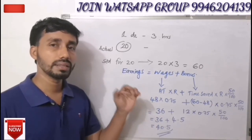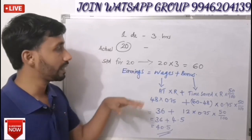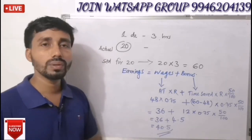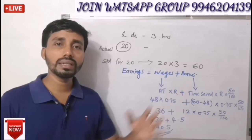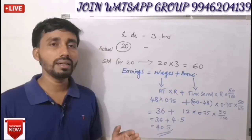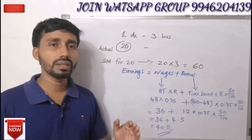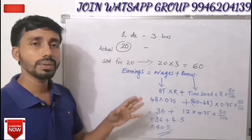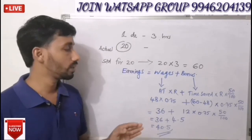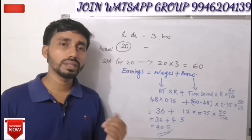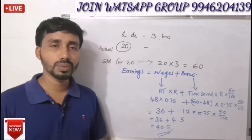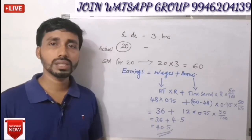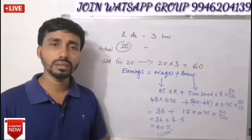The standard is 1 dozen and the actual is 20 dozen, so we convert it to standard time. This is how we work out the Halsey Premium Bonus Plan. If you have any questions, please share this video. Thank you.